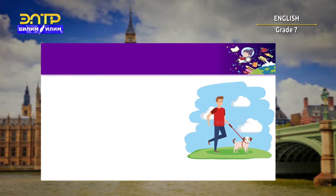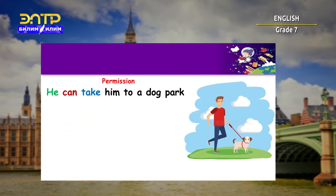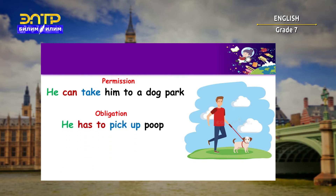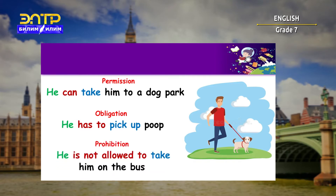If we look at the example with the man walking his dog, we could say: he can take him to a dog park — and this is permission. And we also can say, he has to pick up poop — and this is an obligation. He is not allowed to take him on the bus — and this is prohibition.